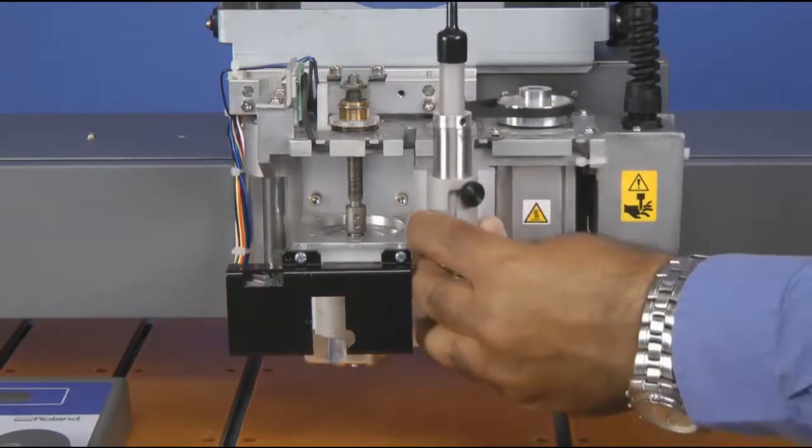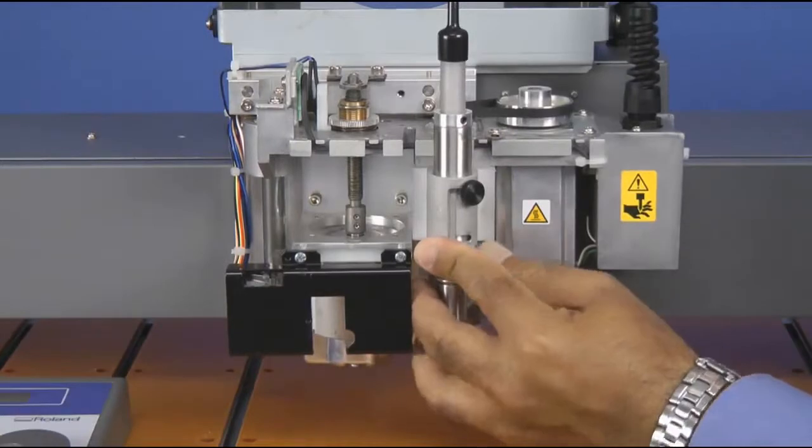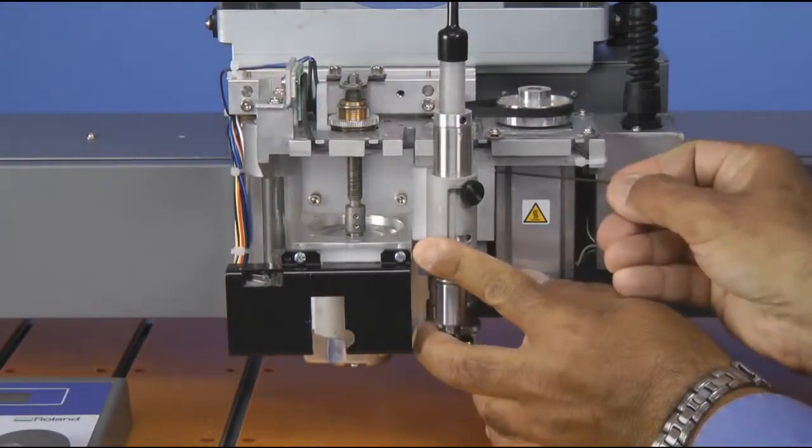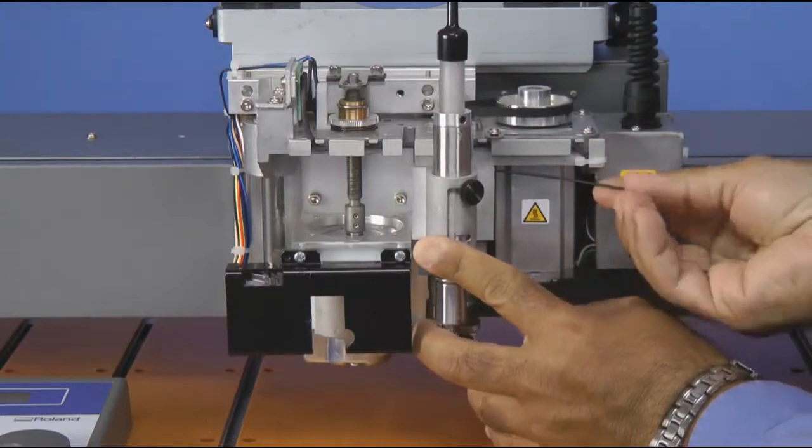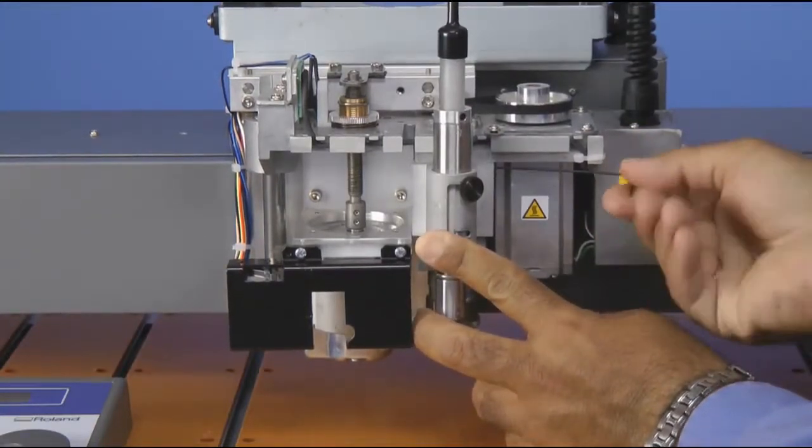You want to go ahead and loosen the set screws and then mount the auto inserter to the spindle block. Using the supplied hex wrench, we want to go ahead and tighten it down.